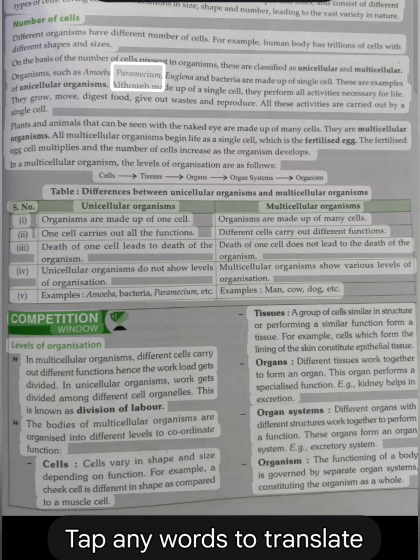Organisms, such as amoeba, paramecium, euglena and bacteria are made up of single cell. These are examples of unicellular organisms. Although made up of a single cell, they perform all activities necessary for life. They grow, move, digest food, give out wastes and reproduce. All these activities are carried out by a single cell.